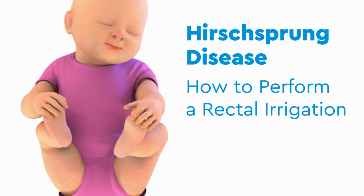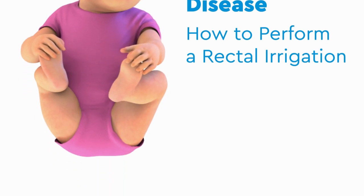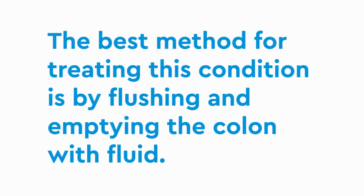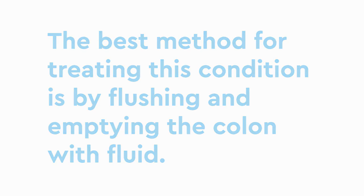Children born with Hirschsprung disease often suffer from enterocolitis. The best method for treating this condition is by flushing and emptying the colon with fluid, which is called rectal irrigation.